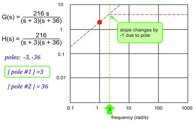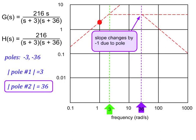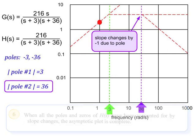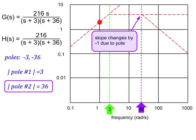So now we move from low frequency to high frequency, adjusting the slope according to these rules. For the pole at minus 3, we adjust the slope at 3 radians per second, and the slope changes from plus 1 to 0. Then for the pole at minus 36, we adjust the slope by minus 1 at 36 radians per second. That completes our construction of the asymptotic plot for this example. Before moving on, let me point out that this particular transfer function is a bandpass filter.